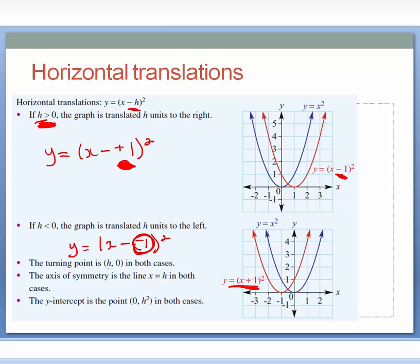The turning point is h comma 0 in both of these cases — the x value is the amount of units shifted left or right, and because it hasn't been translated vertically, the y value is 0. The axis of symmetry becomes the magnitude of the horizontal translation. The y-intercept is 0 comma h squared — if you take the h value and square it, that gives you the y-intercept.